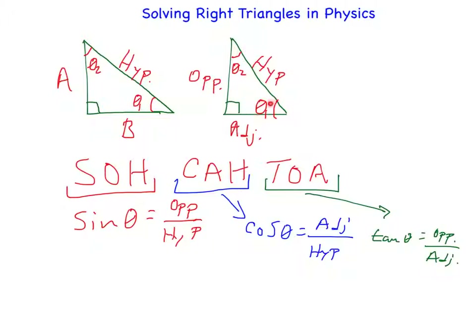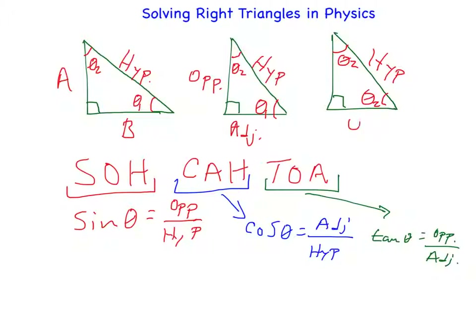Remember I chose theta 1 to name my triangle, but I could have chosen theta 2. So let's rename the triangle based off of theta 2. The hypotenuse never changes. Since I'm using theta 2, one side would be called opposite and the other would be adjacent to theta 2. Notice that the names of the sides changed based on which angle you're talking about, so always identify your angle first.